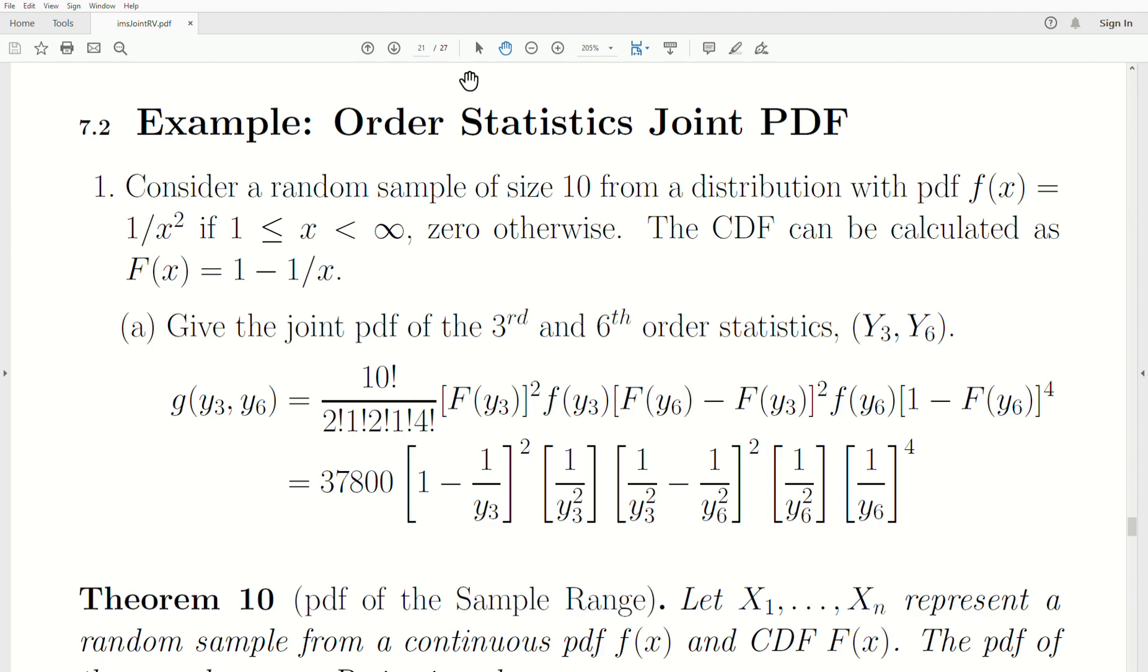Consider a random sample of size 10 from a distribution with PDF f(x) which is 1 over x squared, and 0 otherwise. The CDF can be calculated as capital F, and we want to find the joint PDF of the third and sixth order statistics, y3 and y6.